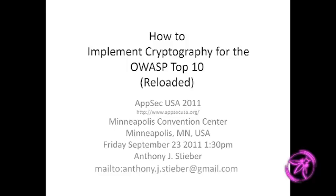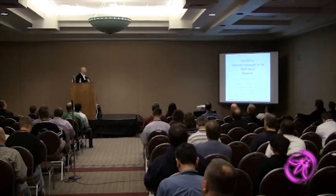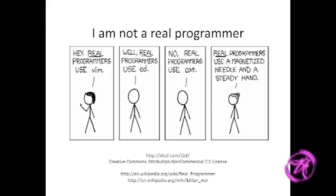This presentation is about how not to implement cryptography — the OWASP Top 10 set. I'll be bringing up failed examples and some use cases, but everything I'm going to be talking about are real-world examples I've seen, and they're published examples, so there's no proprietary or insider information here. I'm not a real programmer; applied cryptographer is a good term for what I do.